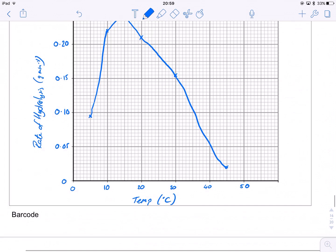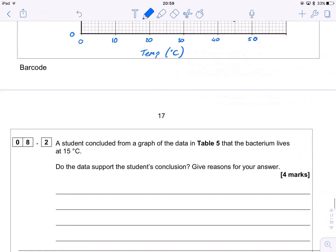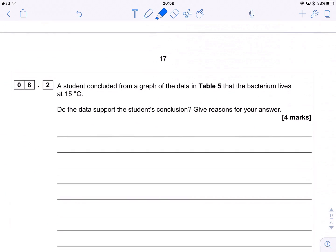So we have to just end our line graph there. The next thing we need to do, however, is decide that this student, he's decided that this bacteria must live at 15 degrees C. And we're asked, do the data support that or not? And we have to give reasons.